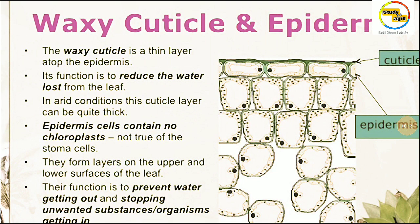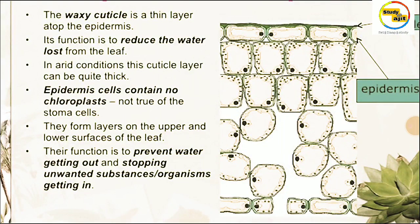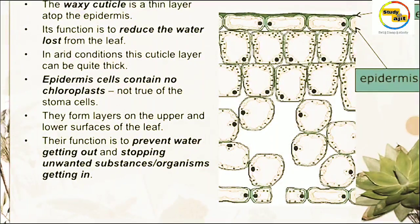Next, we will discuss the waxy cuticle and epidermis. The waxy cuticle is a thin layer on the epidermis. Its function is to reduce water loss from the leaves. In arid conditions, this cuticle layer can be quite thick; otherwise, it is always thin. Importantly, epidermal cells contain no chloroplasts — unlike guard cells.